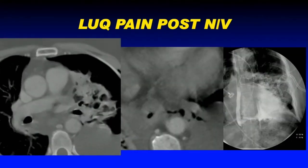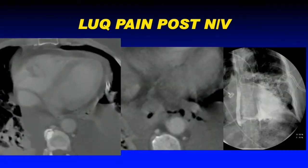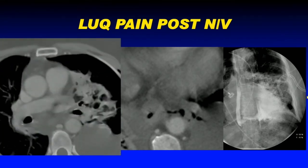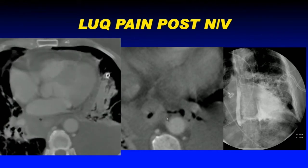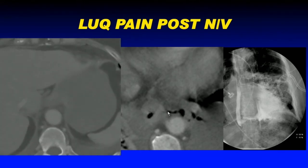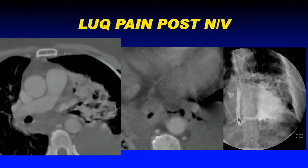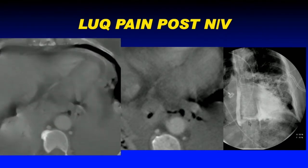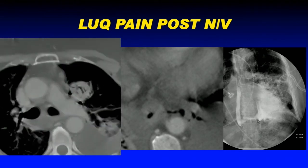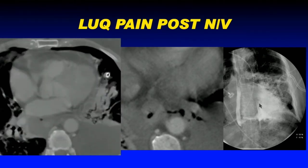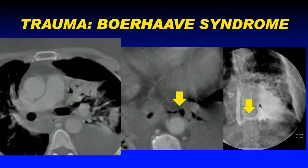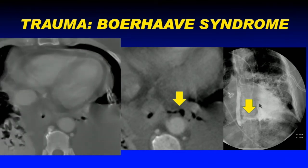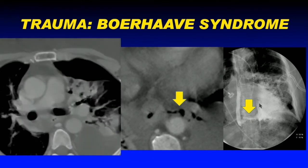Another patient with severe nausea and vomiting and left upper quadrant pain had a very focal lower mediastinal gas collection extending from the lower esophagus to the left pleural space, corresponding to a track seen coming from the esophagus going to the pleural space. Given the history of severe nausea and vomiting, a Boerhaave diagnosis was made, and this patient had endoesophageal stent placement.